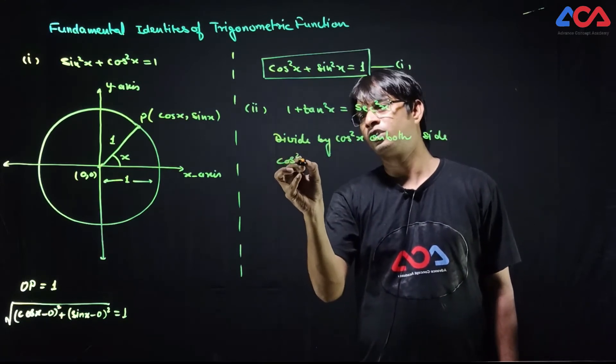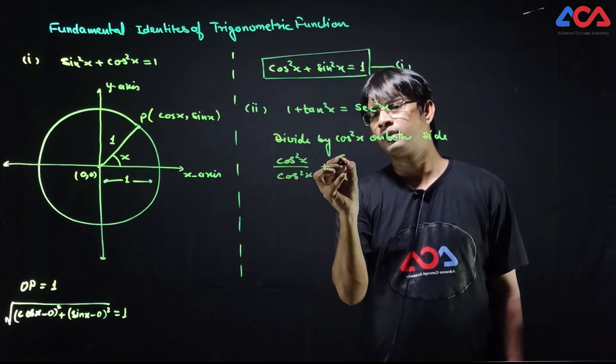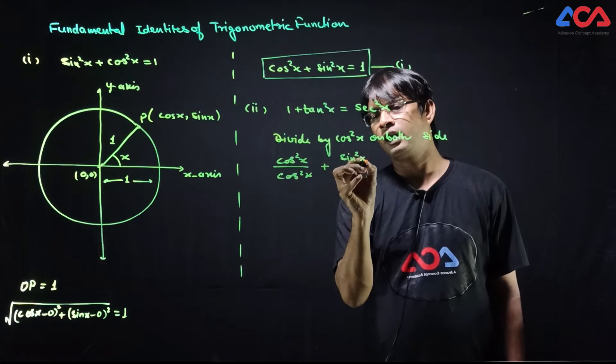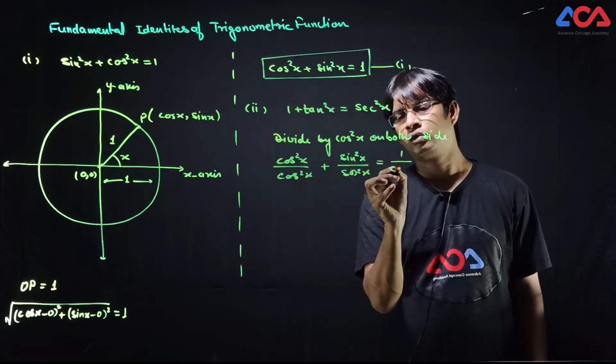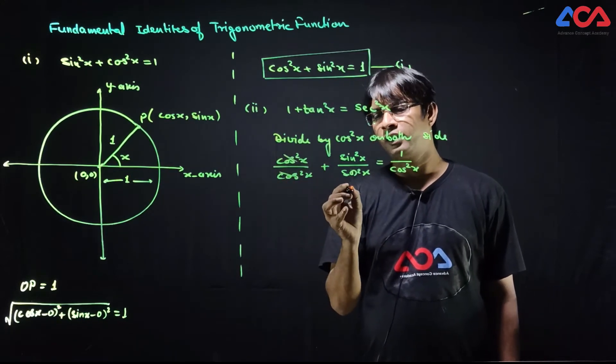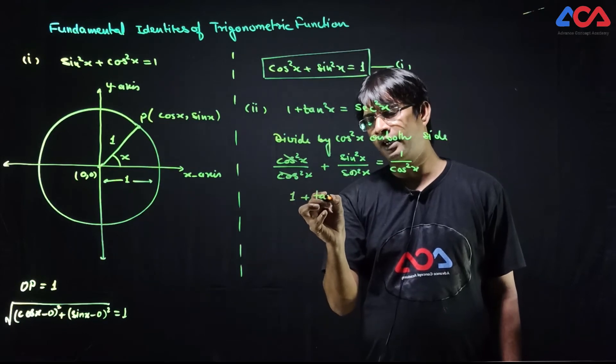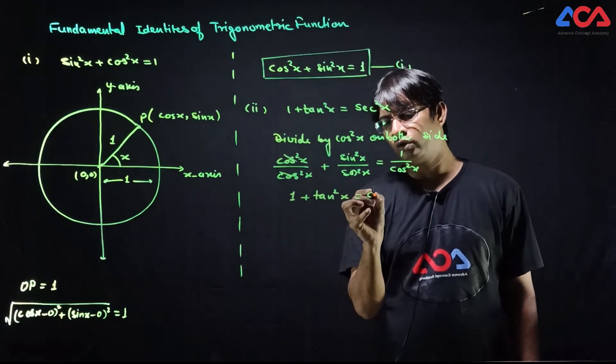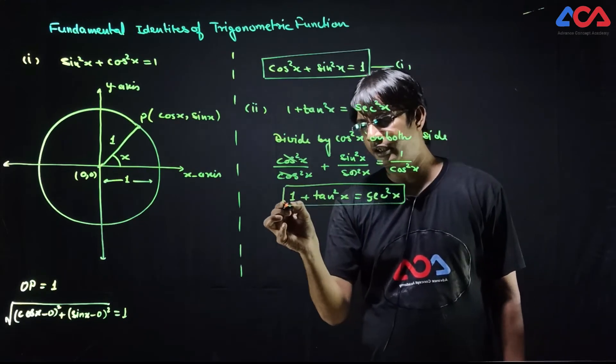So cos²x/cos²x + sin²x/cos²x = 1/cos²x. This simplifies to 1 + tan²x = sec²x. The second identity is proved.